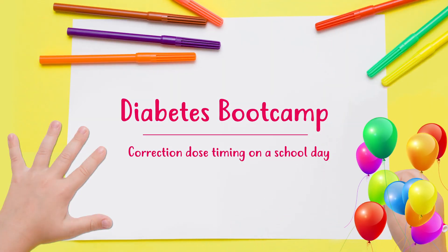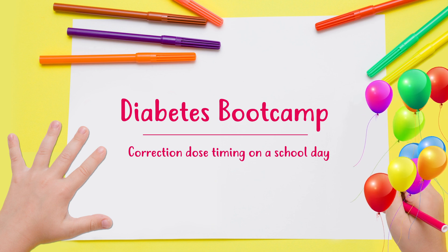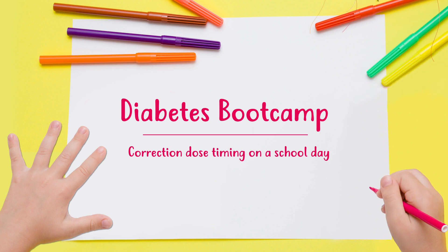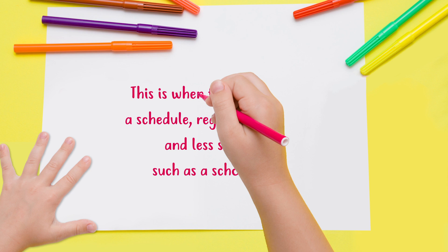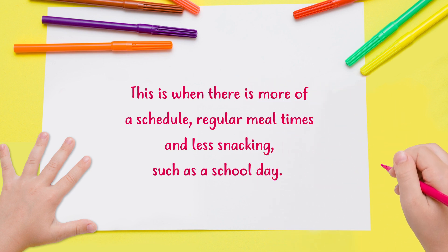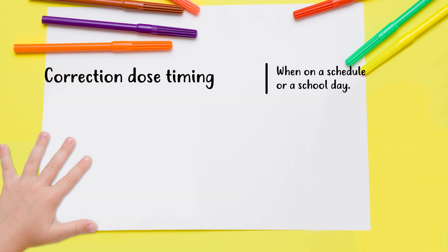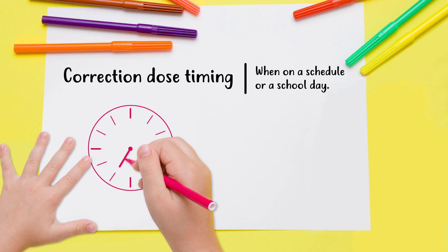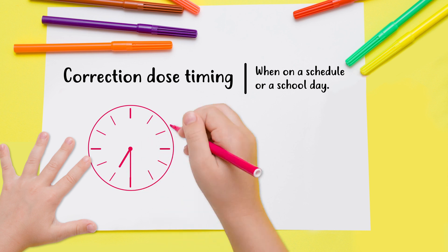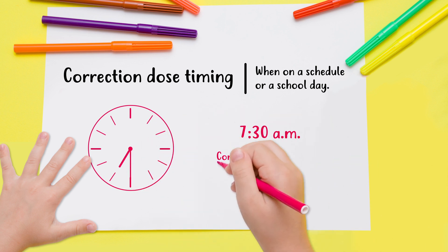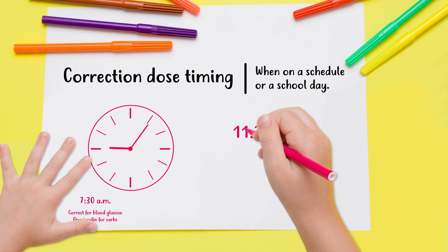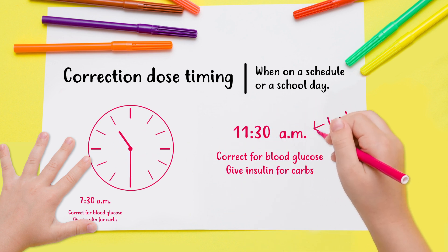Let's talk about school days. This is a day when there's more of a schedule with regular mealtimes and less snacking. You check your glucose and eat breakfast at 7:30 in the morning. You take a correction dose for high glucose if needed, and also dose yourself for carbs. At 11:30 a.m.